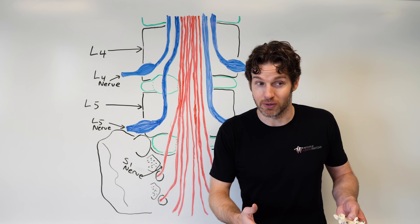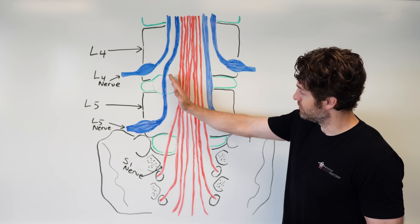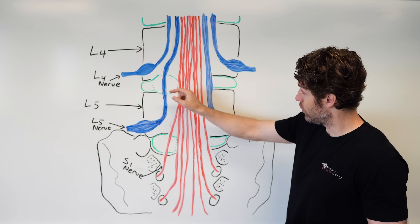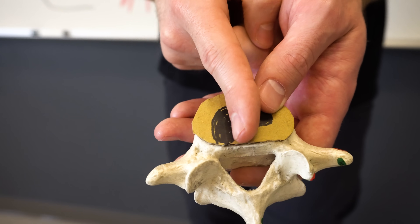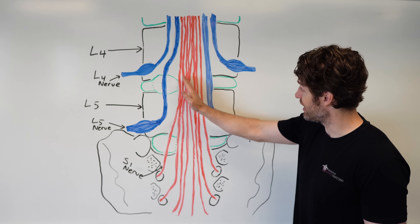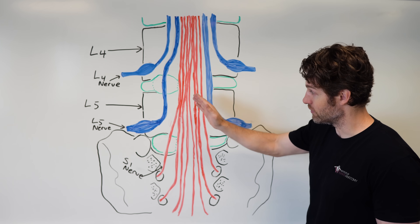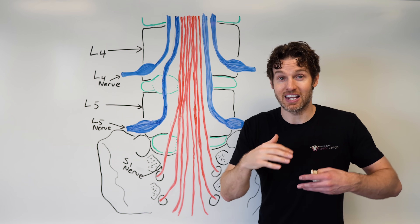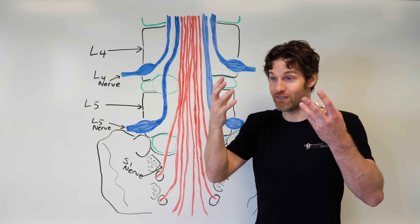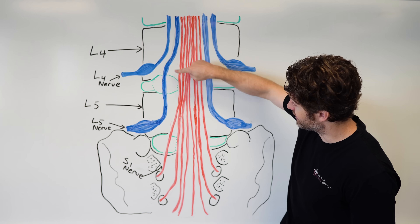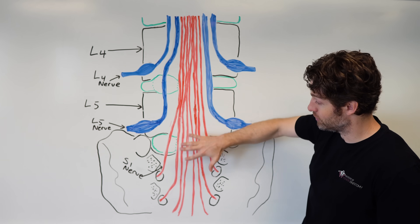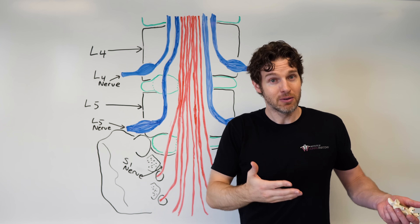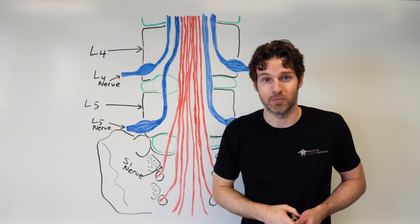If a herniation is even larger or more central — slightly more medial — it could affect even more of those sacral nerves. This picture gives a clear visual of how you can affect certain nerves, spare others, and even affect more sacral nerves than you might anticipate, given that there are no discs actually in the sacrum.